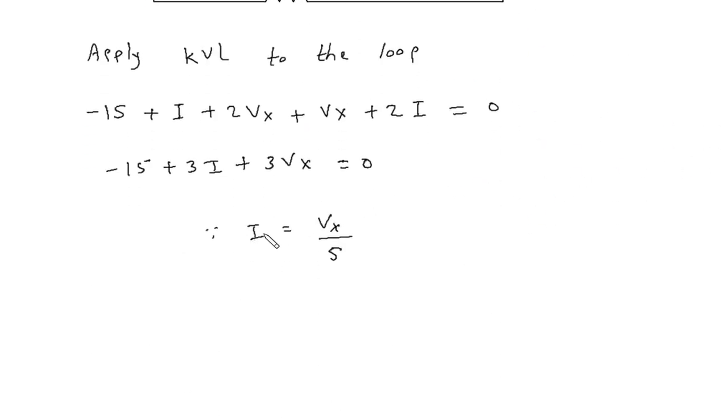we will put this value of i in this equation. So, minus 15 plus 3Vx by phi u plus 3Vx is equal to 0.